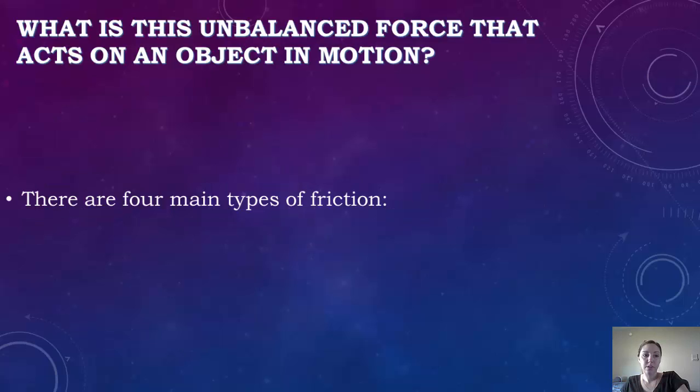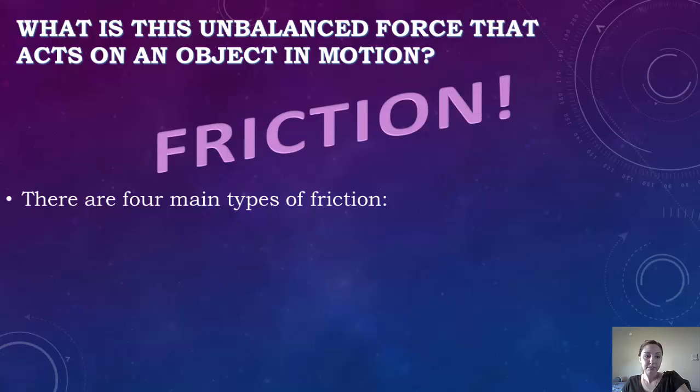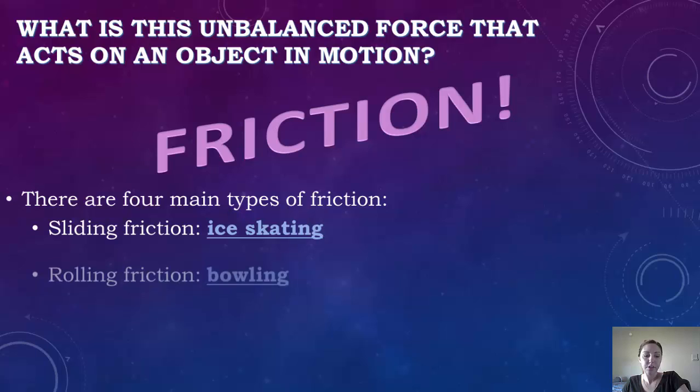So what is this unbalanced force that acts on an object in motion? That can be named friction. There are four main types of friction. You have sliding friction, which, for an example, in ice skating, when your skates are sliding across the ice, that causes a type of friction.